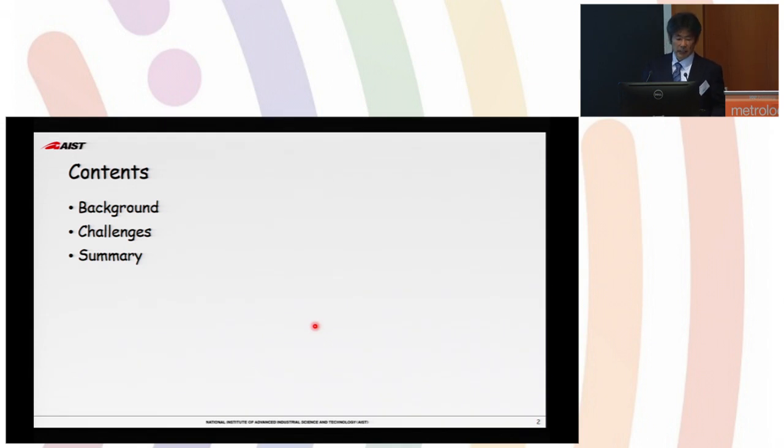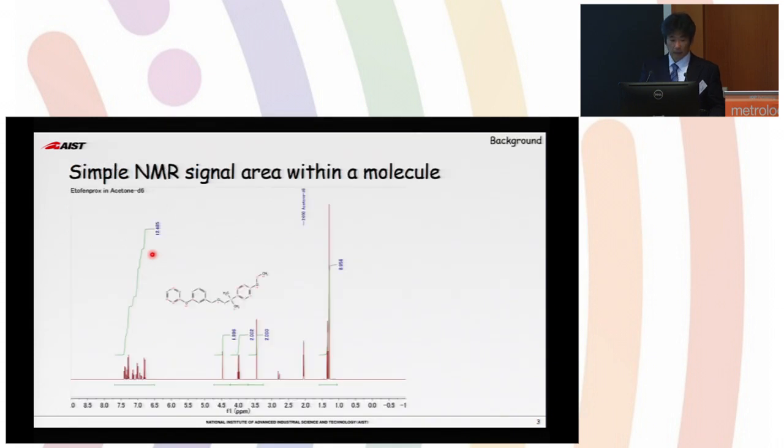I'd like to talk about the background a little bit, challenges of how the QNMR have compared to the NMR and summary of that. NMR has about 70 years of history and have been known that it can be analyzed quantitatively. But NMR has been used mostly for structural determination and characterization.